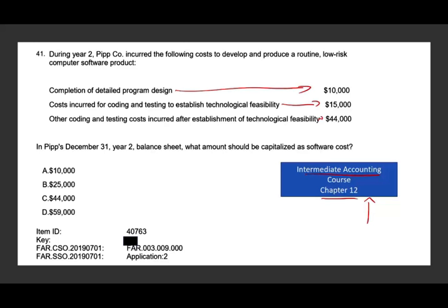The $10,000 completion of detailed program design — we didn't even start yet, we're designing the program, so that's expensed. Cost incurred for coding and testing to establish technological feasibility, $15,000 — we have not reached technological feasibility, so that's out too. Other coding and testing costs incurred after establishment of technological feasibility — after that, we can capitalize. The answer is C, $44,000.